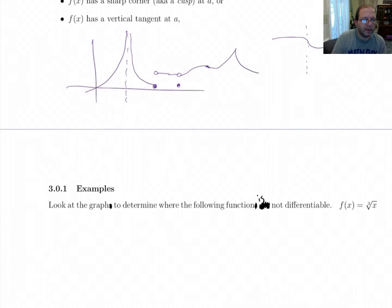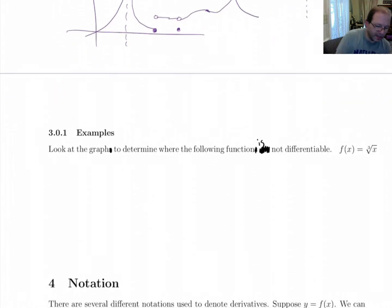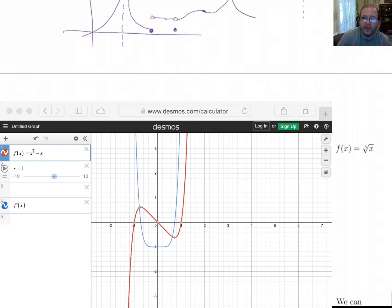So, let's look at this example. It says, look at the graph of the cube root of x to determine where it's not differentiable. So, if we look at cube root of x.